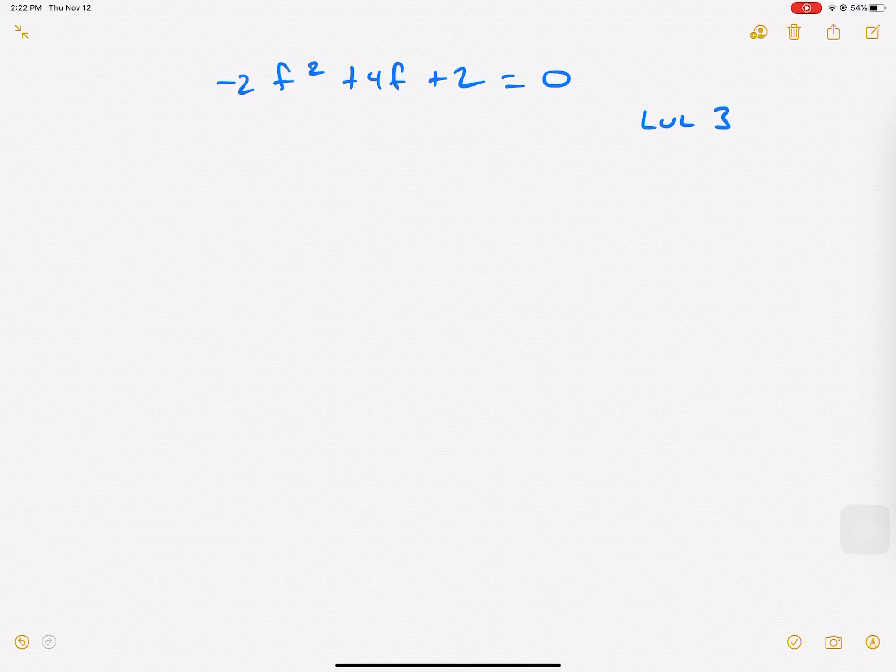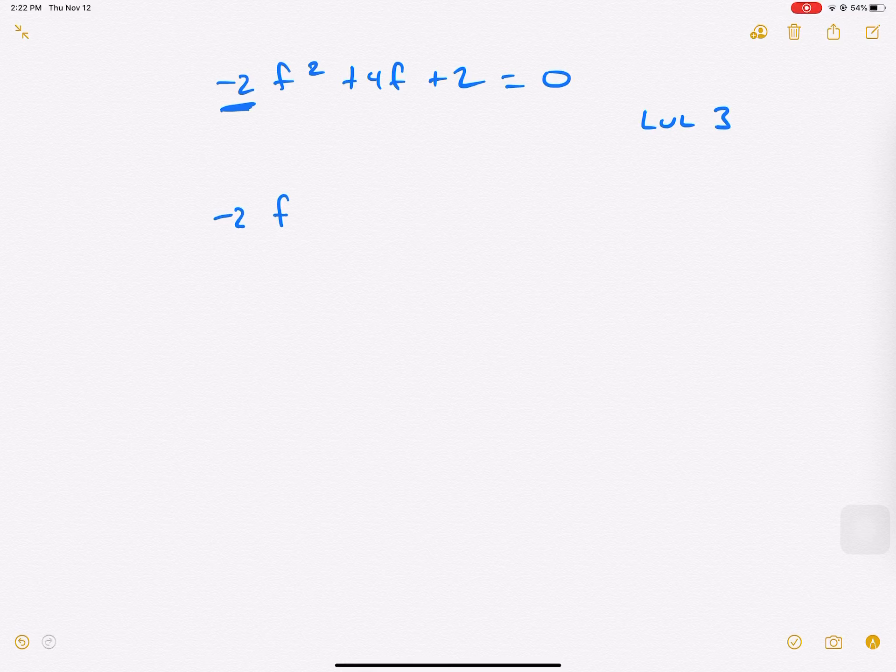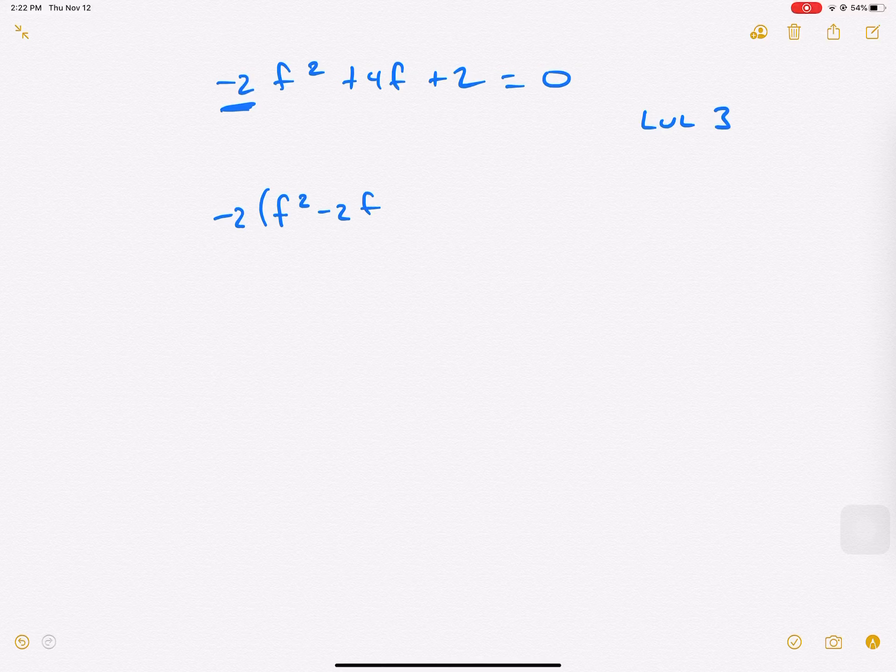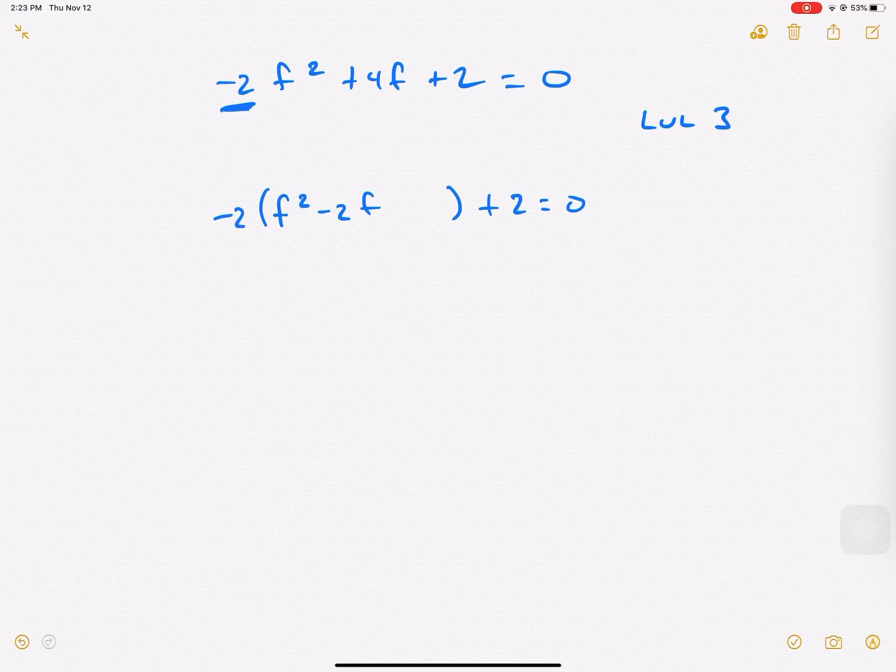What we do is we don't like the a value - we talked about this before - so we factor it out and we're left with f squared minus 2f. I only take it out of the front 2. That's how I think it's going to be easiest for me.